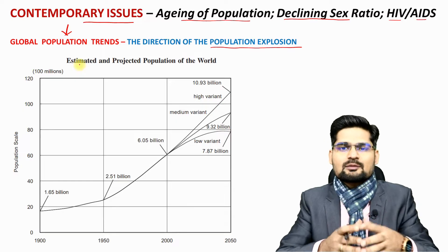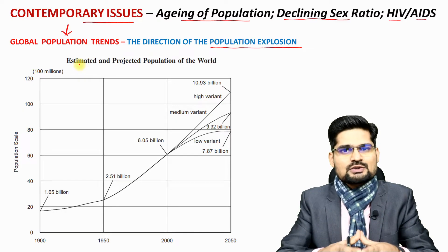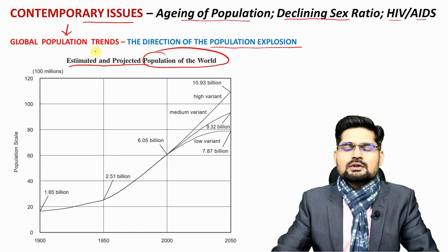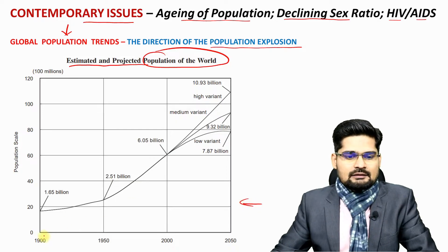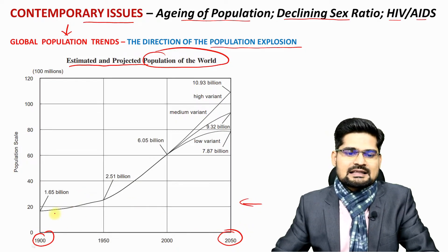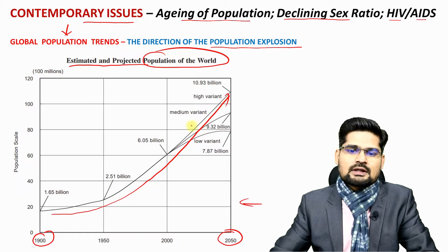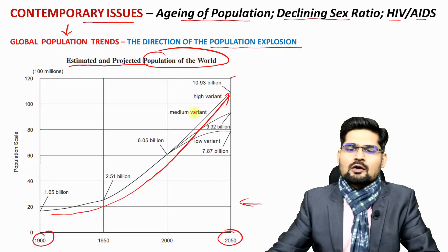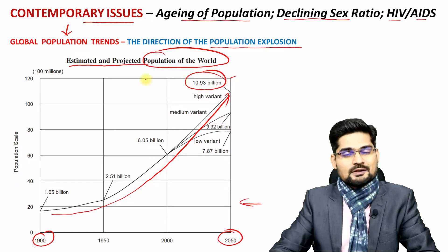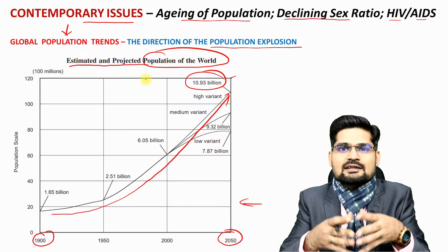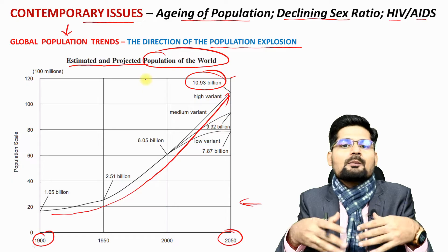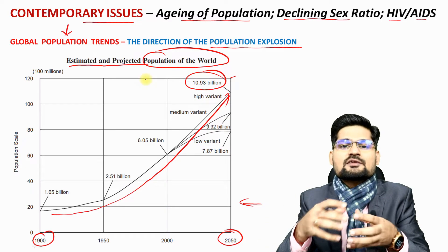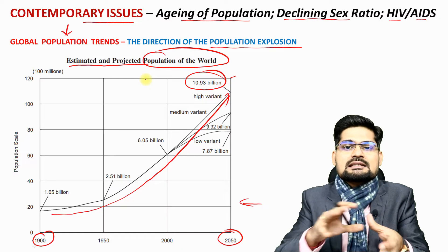In the previous lectures in population geography, we addressed several such issues. Now if you look at this estimated and projected population of the world, there is a very interesting insight here. From 1900 to 2050, this gives us a huge exponential growth of population. By 2050 and above, we are going to cross almost 10.9 billion population of the world. It means the world is going to be more peopled, and the associated aspects of population are also going to change significantly.